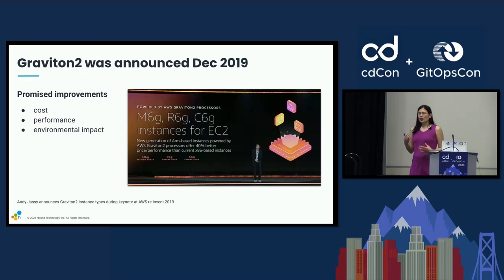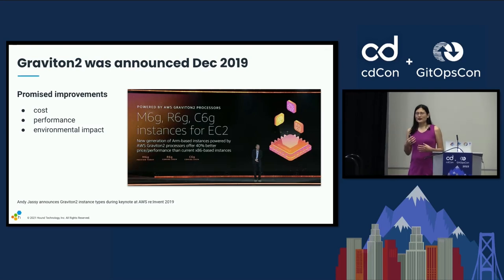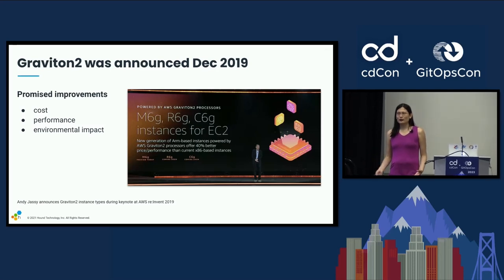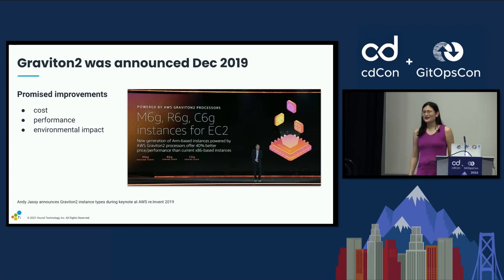The ARM64 processor architecture has been commercially available since end of 2019, beginning of 2020, with the announcement of the Graviton 2 processors available in Amazon EC2. Since then it's expanded to a lot more cloud providers. Basically any major cloud provider will support this, whether it be Azure, GCP, Oracle, or Equinix. And many of you have macOS devices that are actually ARM under the hood.